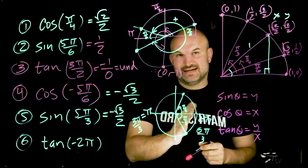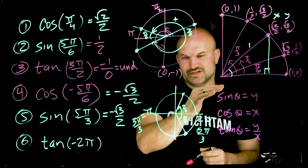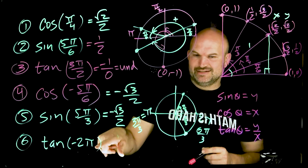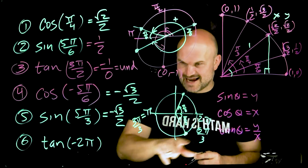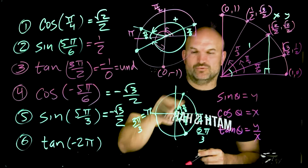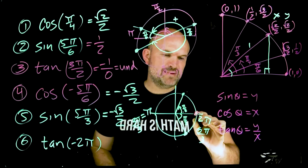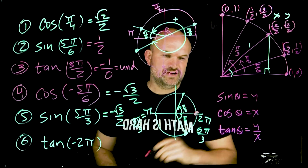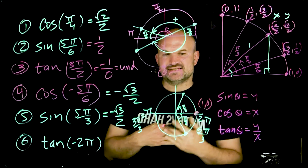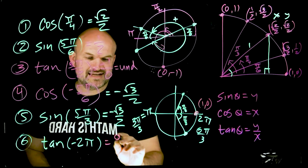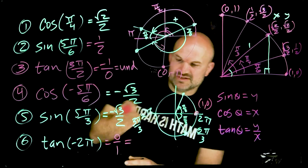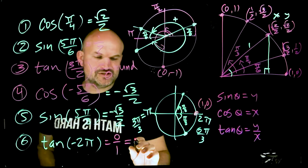Last is tangent of −2π. A negative angle goes clockwise, and −2π is a full clockwise revolution, bringing us back to the starting point (1, 0). Tangent is y over x, which is 0 over 1 — and zero divided by one is simply zero.